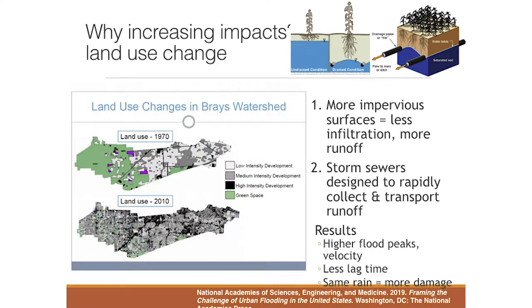Flood impacts are getting worse, and it's in the news a lot. Two things are increasing the impacts. One has to do with how we're changing landscapes, particularly rates of urbanization. This is a watershed in Houston — Bray's Bayou. Two maps show land use in the 1970s versus 2010. As the years went by, the western parts went from open fields to residential neighborhoods, strip malls, and streets.